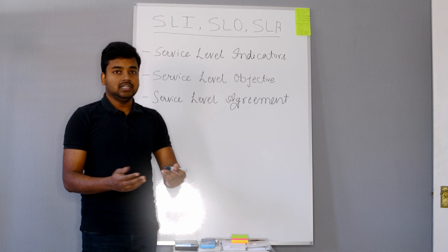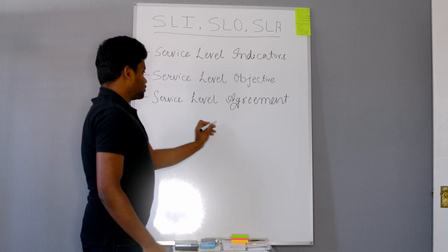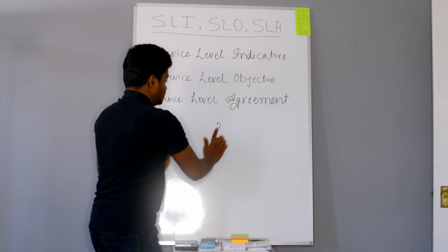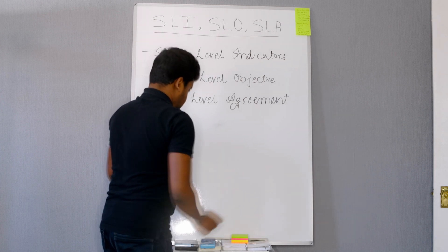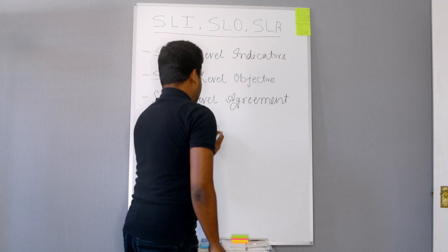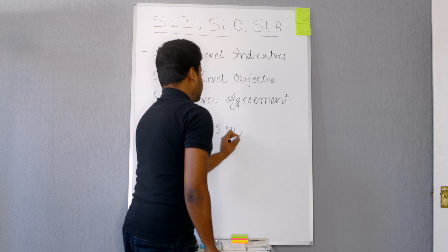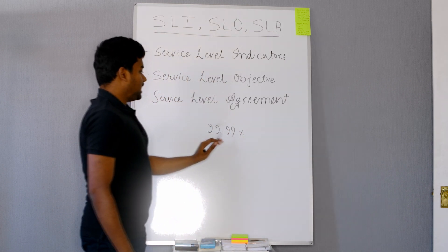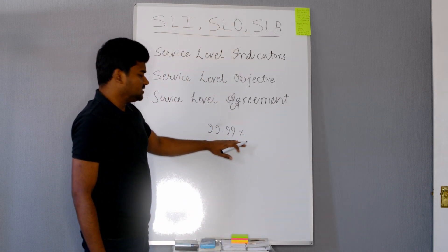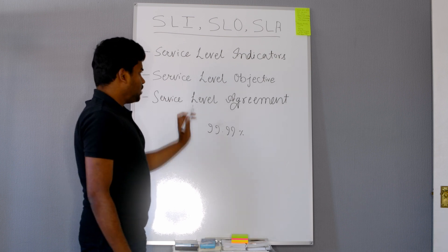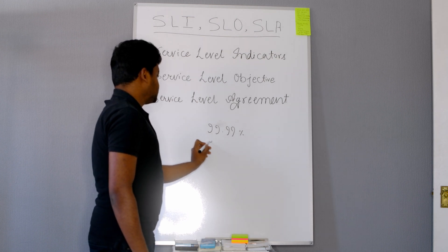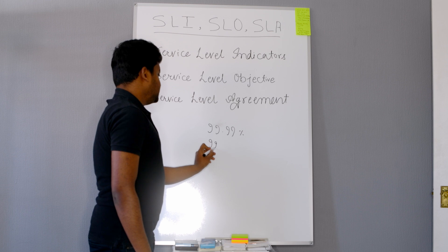When we talk about availability, our indicators show that my service is 99.99% available. These are my indicators, my trend is 99.99%. So now my objective should be it should be available at least 99.95%.